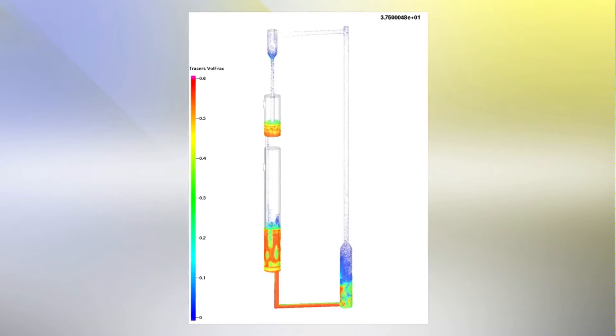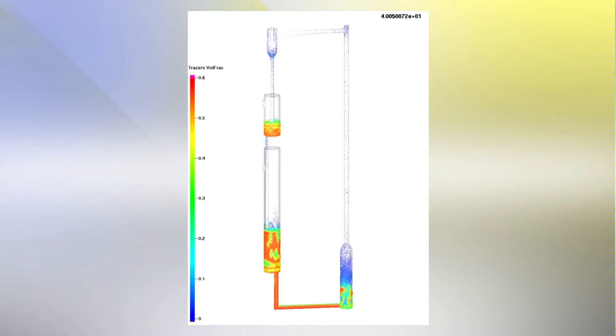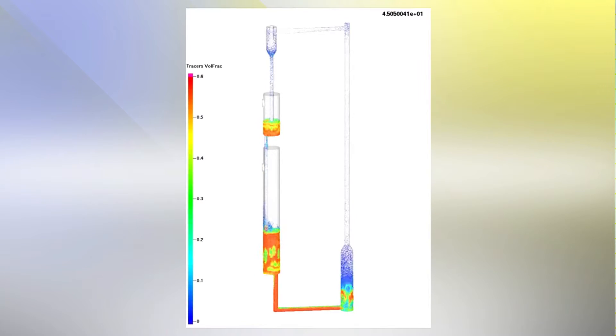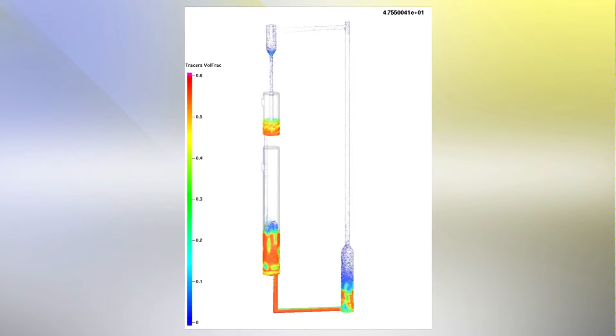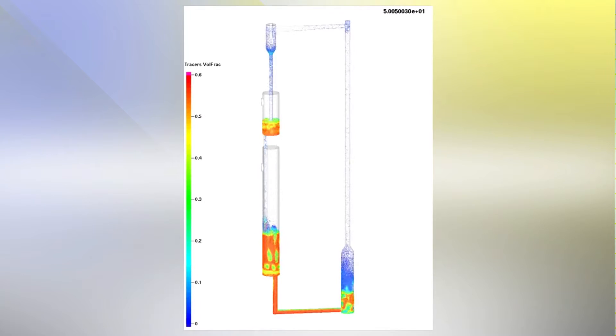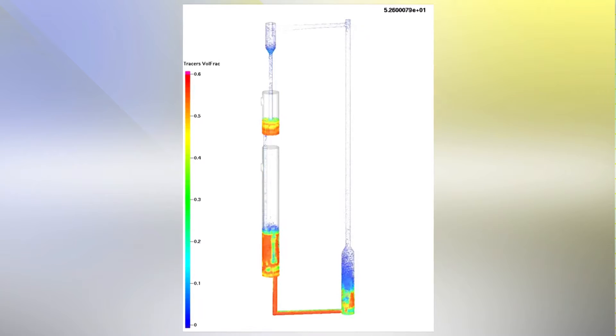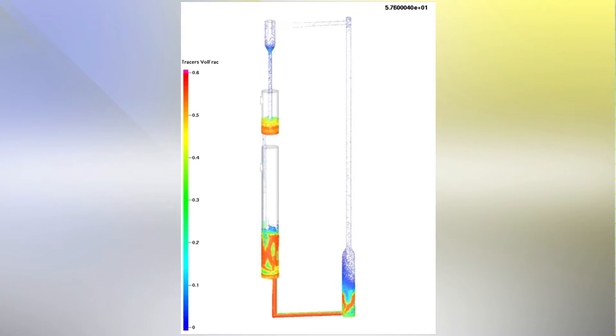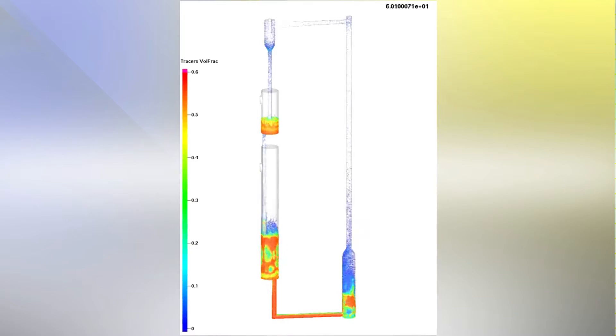In the chemical looping combustion oxygen process, air and fuel do not directly mix or react. The oxygen required for fossil fuel combustion is provided by a solid material such as iron oxide or copper oxide. These solid oxygen carrier materials are continuously circulated between a fuel reactor and an air reactor.